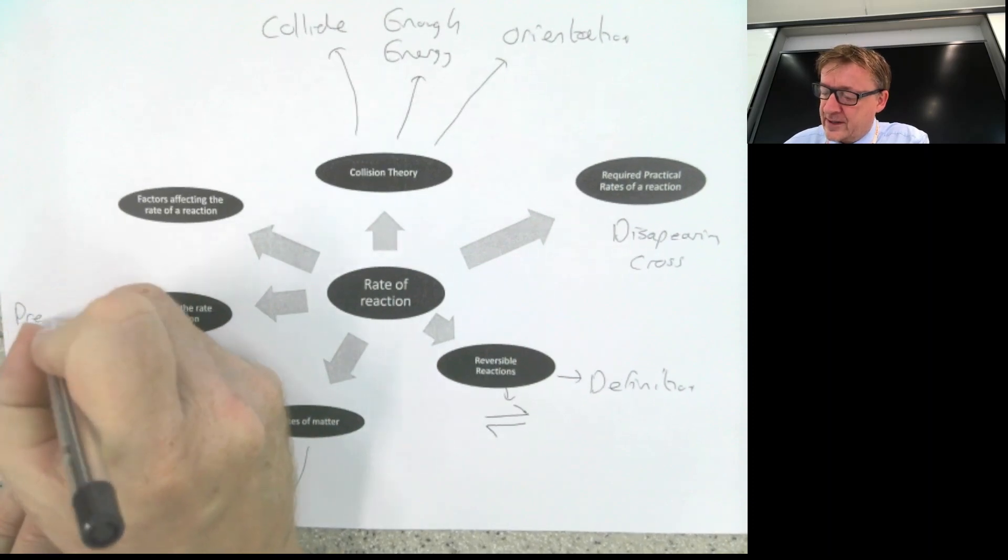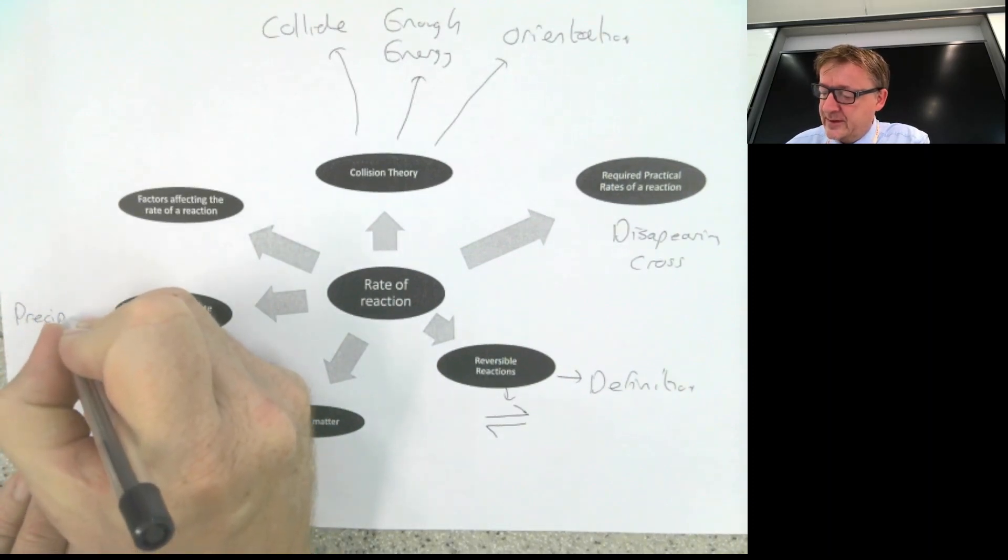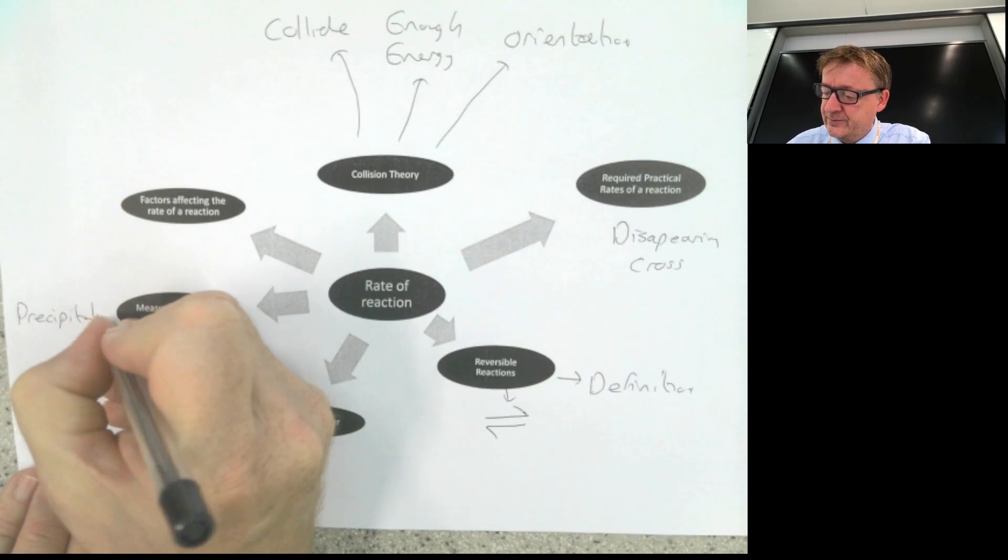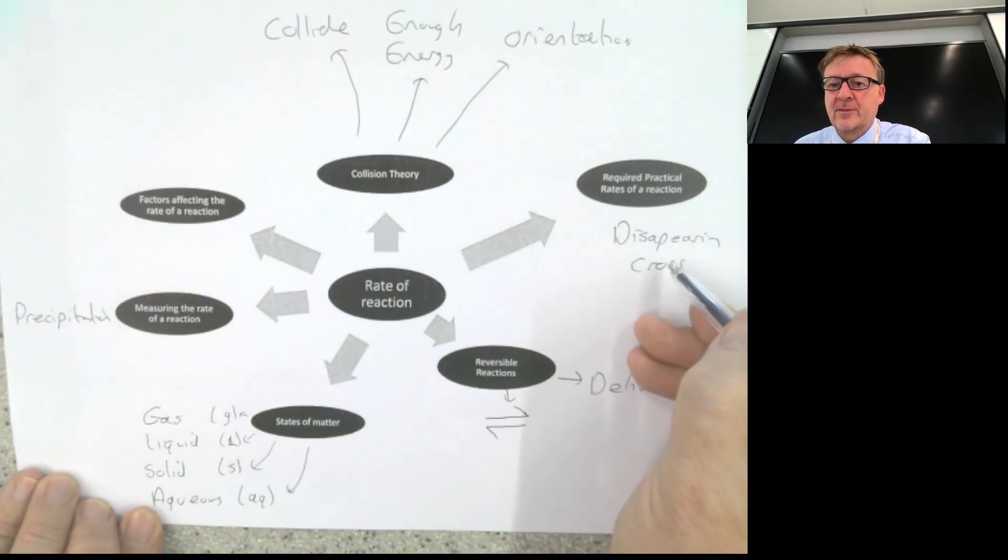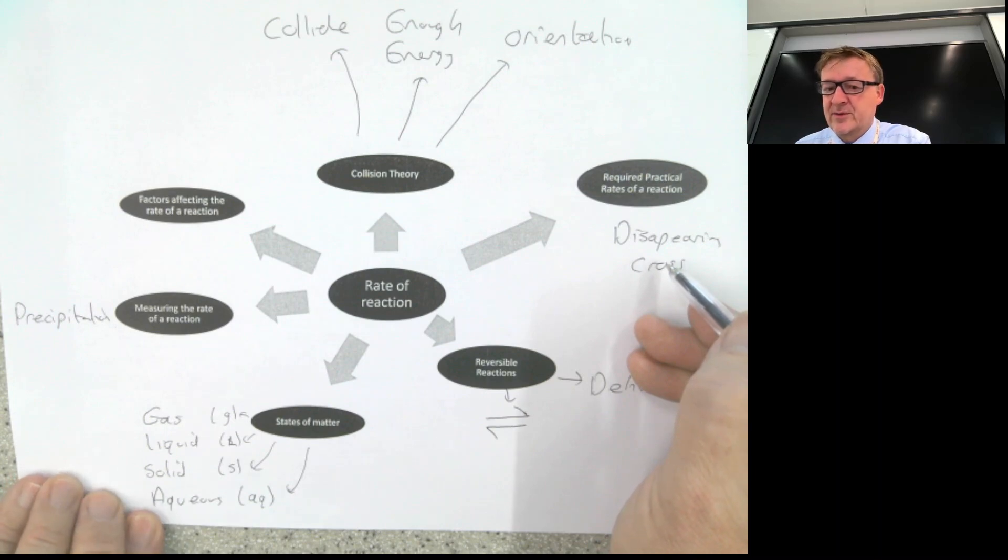First one is precipitation. That is your disappearing cross. But what happens is a precipitation appears which makes it go cloudy.